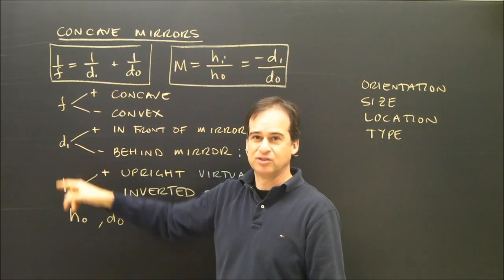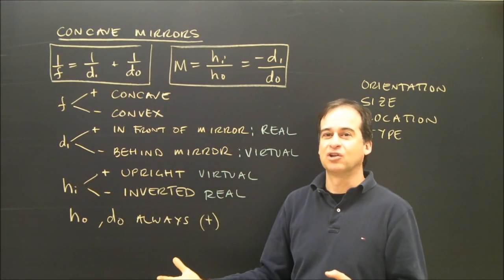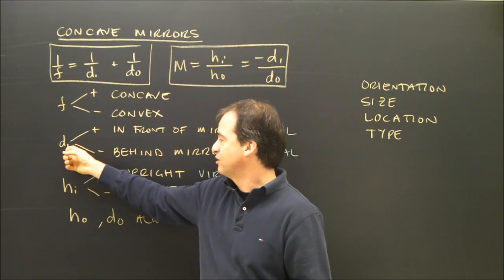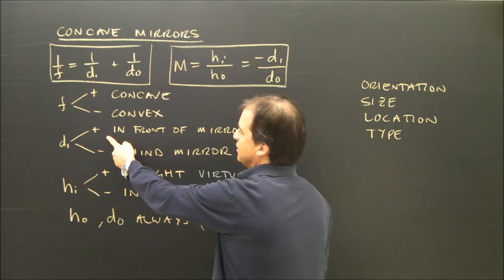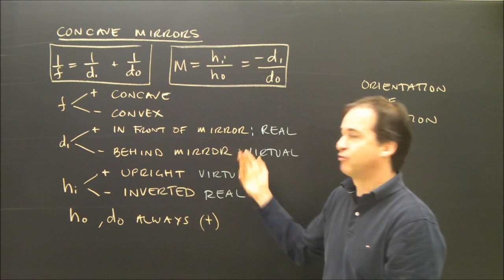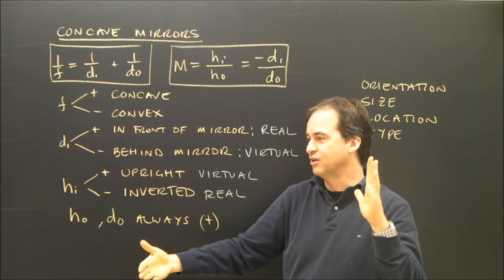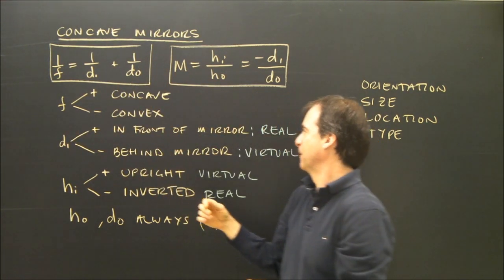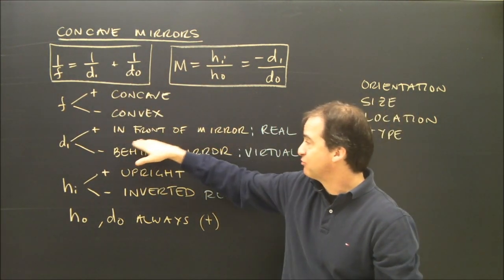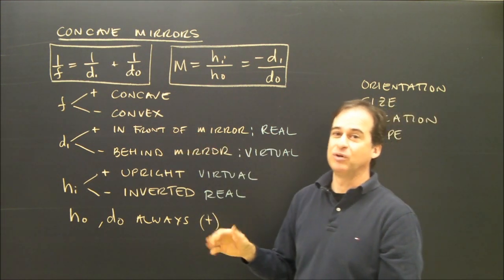The distance to the image. We're mostly interested in, here's an object, here's a mirror, tell me what the image looks like. So height of distance to image and height of image are frequently what we're looking for. Distance to image. Positive means in front of the mirror. That means if I have a mirror like this, and I have an object here, the image is in front of the mirror. By the way, if it's in front of the mirror, it means it's a real image. So that's how we can tell what type it is.